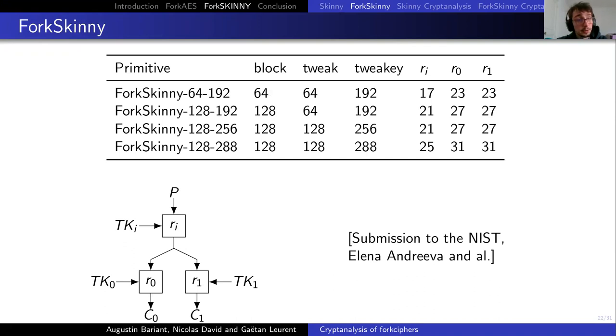ForkSkinny is a block cipher built on Skinny. There are different versions of it. And today we will be interested in building an attack for ForkSkinny-128-256 that have initial rounds equal to 21 and fork rounds both equal to 27. The number of fork rounds is greater than the number of initial rounds to weaken reconstruction queries. ForkSkinny has been submitted to the NIST and still is in round two.